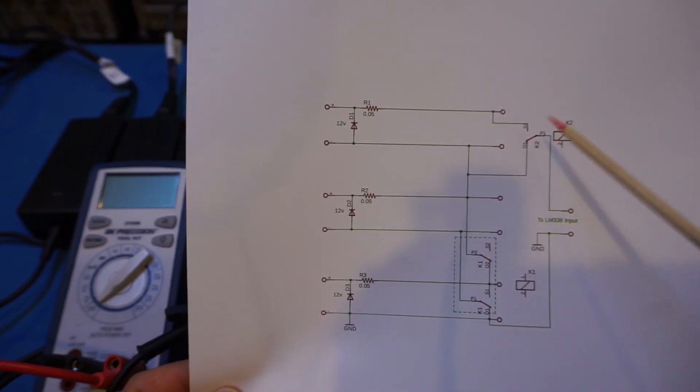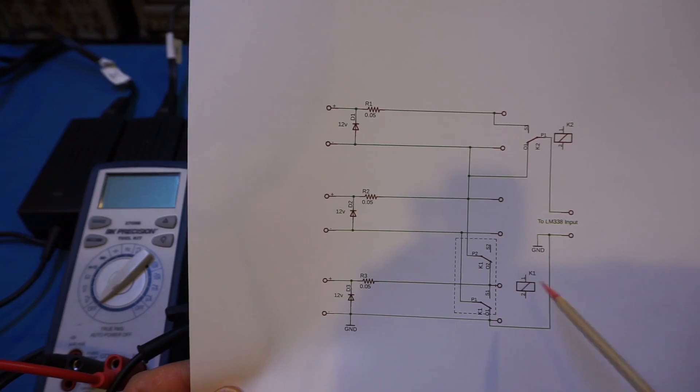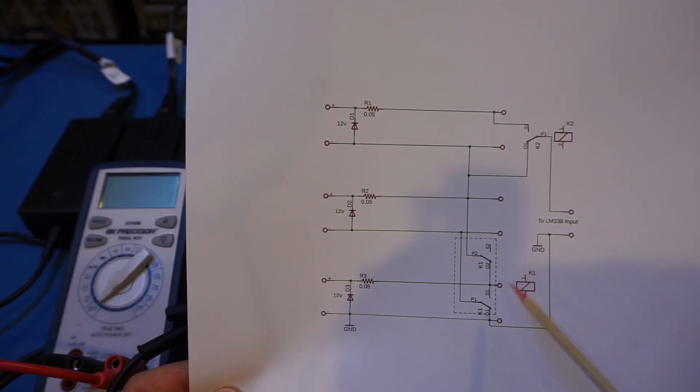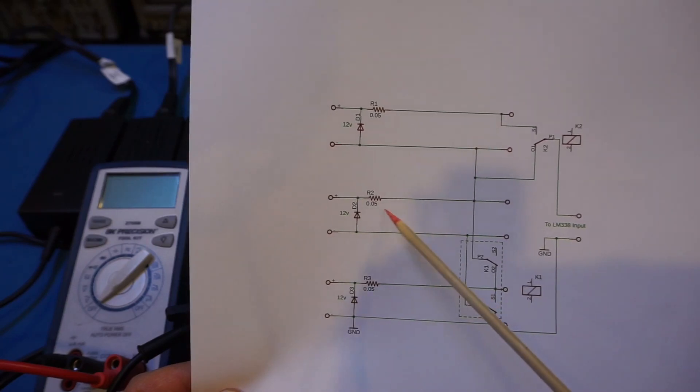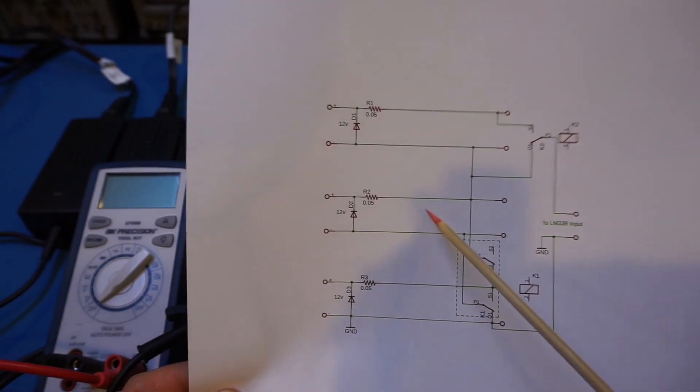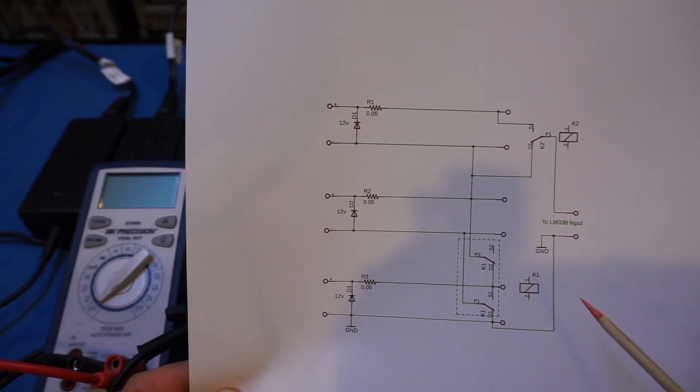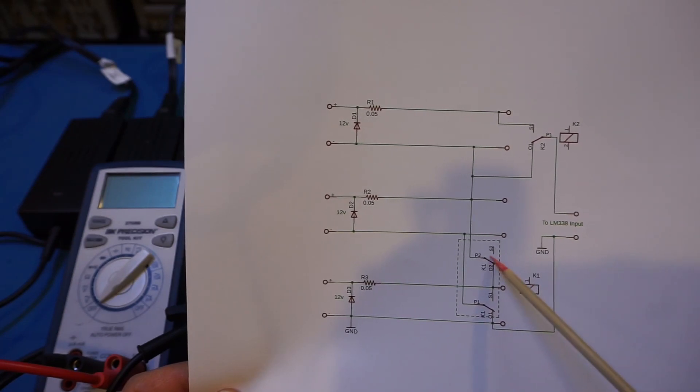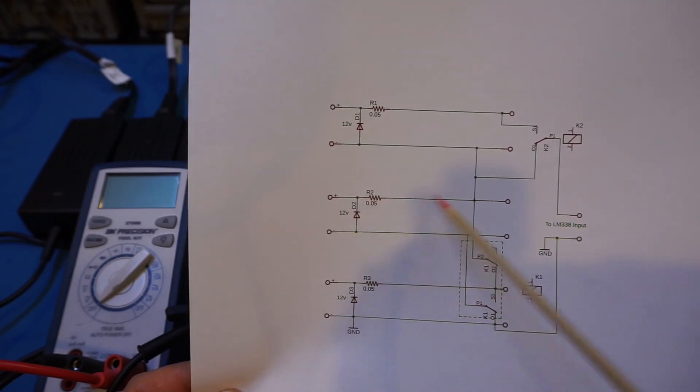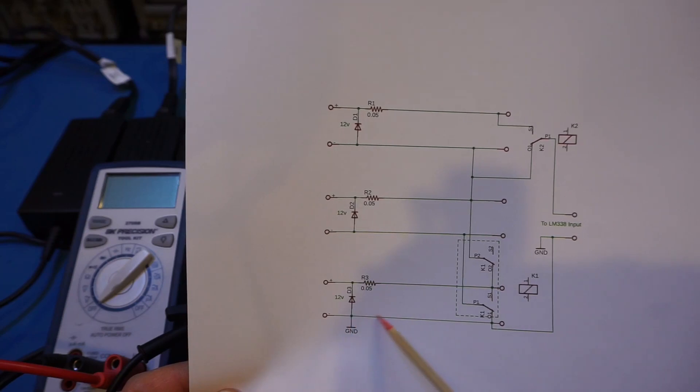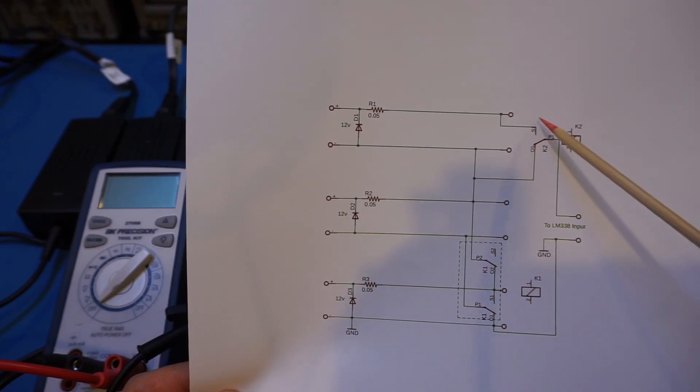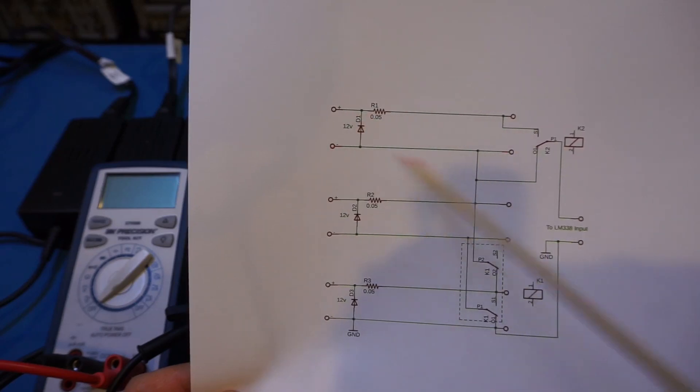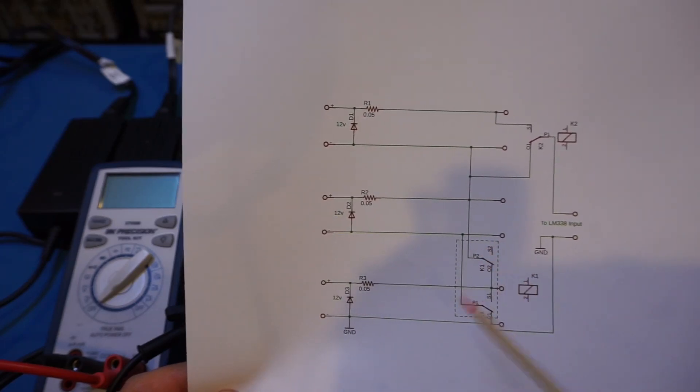And of course, we already know how this operates. This K1 is a double pole double throw relay. And at its current state, you can see these lower two rails are parallel together. And when we switch this relay on, you will see that these two rails become in series. And also, once the K2 switches to the other position, the third power rail is being added to the bottom two.